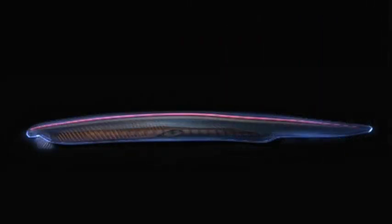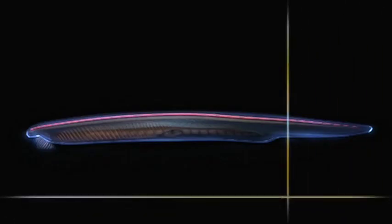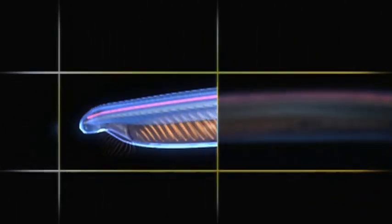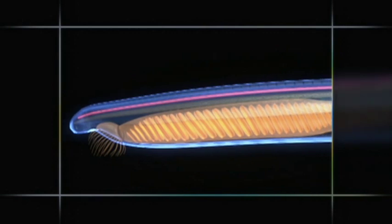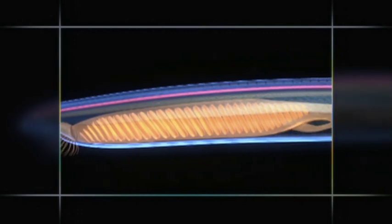Amphioxus has a nerve cord which relays commands from the brain. It has gill slits, just as human embryos do.